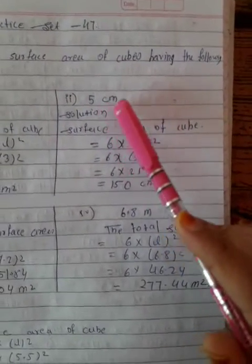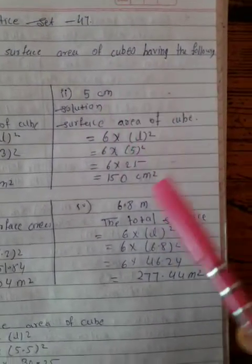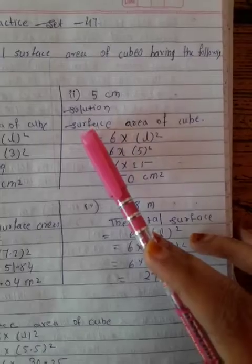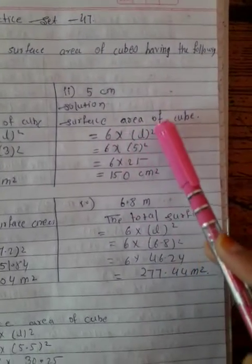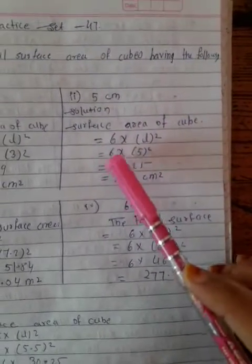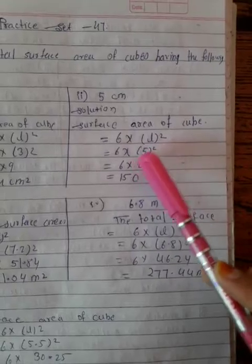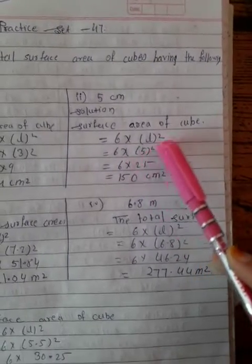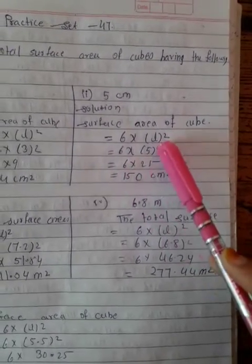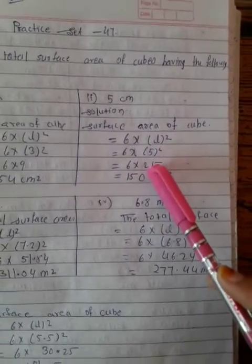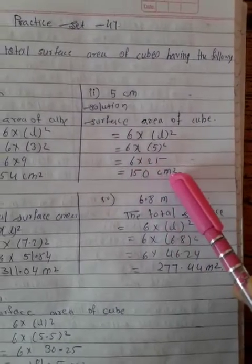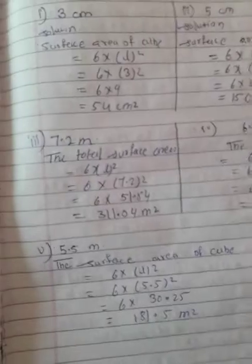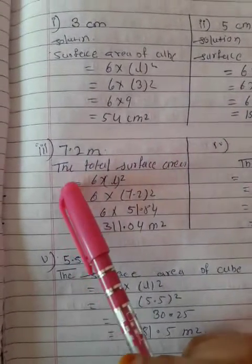In the second question, the side is 5 centimeters. Write the same formula: surface area of cube = 6 into length squared. So 6 into 5 squared, 5 squared is 25, and 6 into 25 equals 150 centimeter square.